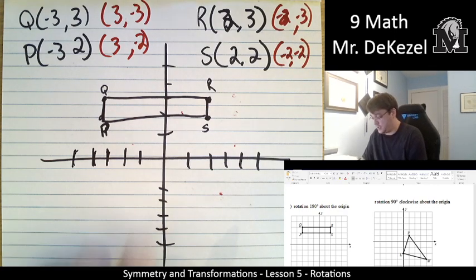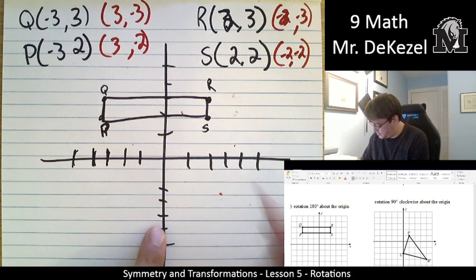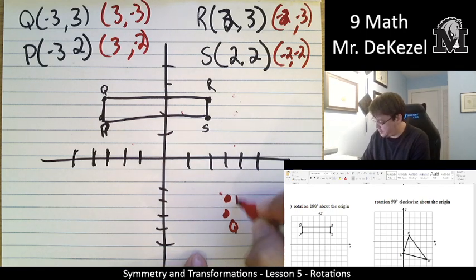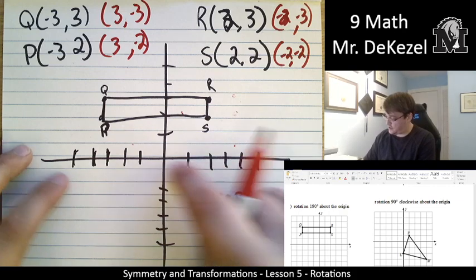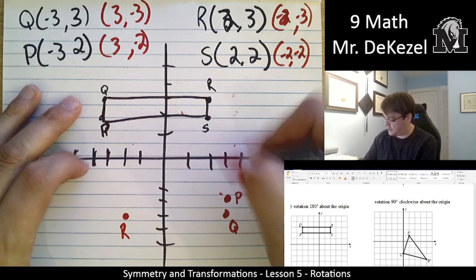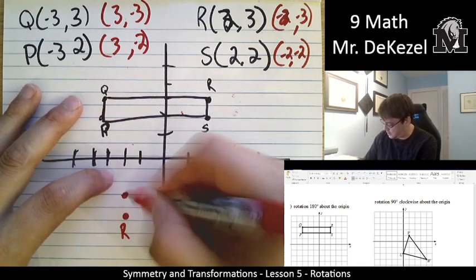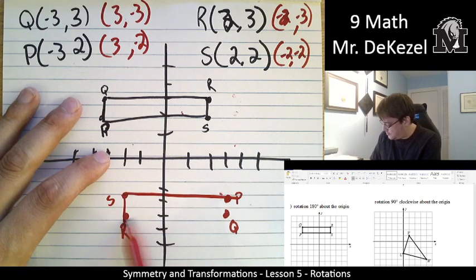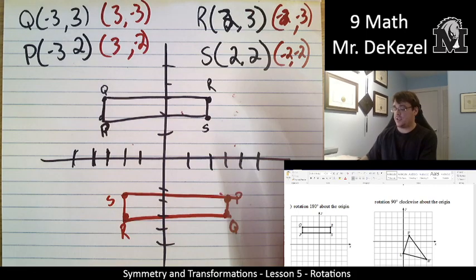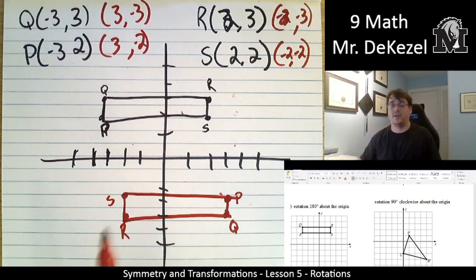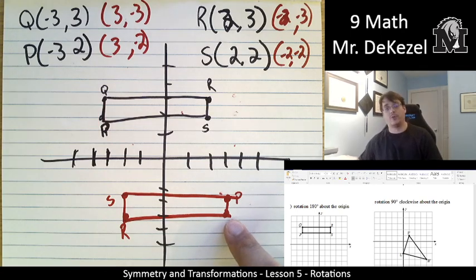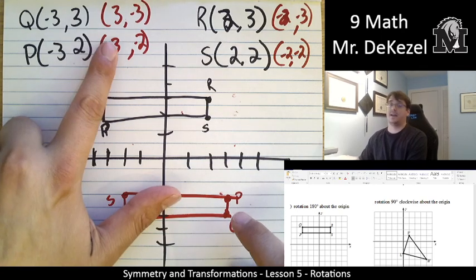We're going to plot those points. 3 minus 3, that's point Q. 3 minus 2, that is point P. Minus 2 minus 3, that is point R. And point S is minus 2, minus 2. We're going to draw that box. You can see that we have taken it and flipped it around the origin 180 degrees. For rotating 180 degrees, you simply flip the signs of each point.